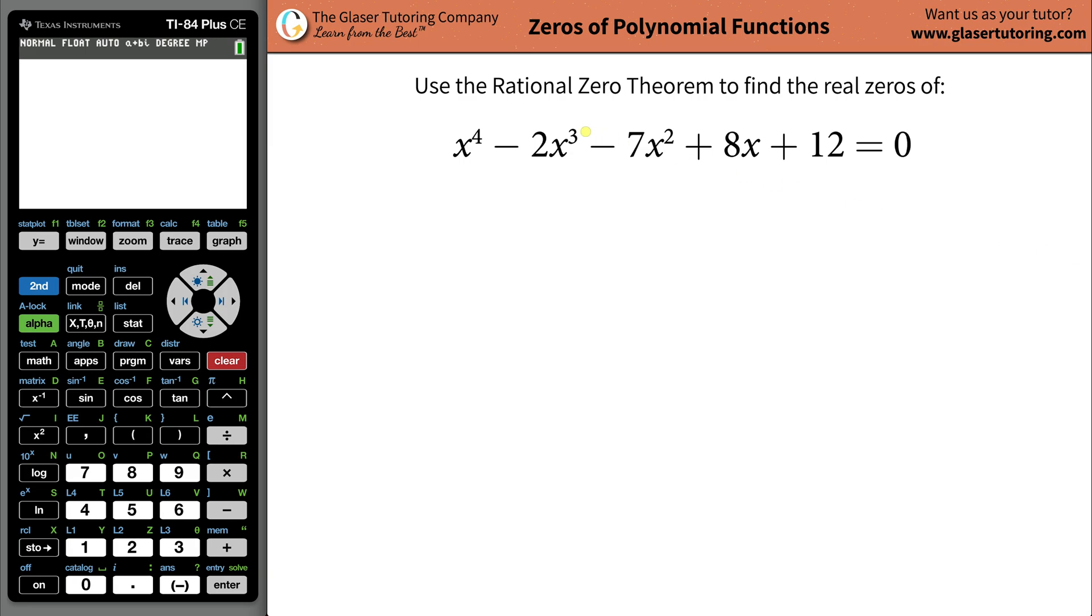Andrew Glazer here from glazertutoring.com, and today I would like to teach you how to use the rational zero theorem to find the real zeros of this function: x to the fourth minus 2x cubed minus 7x squared plus 8x plus 12.